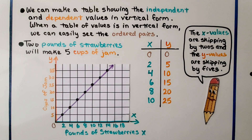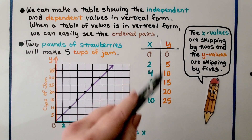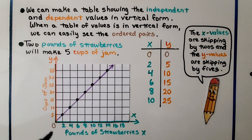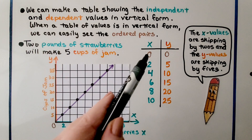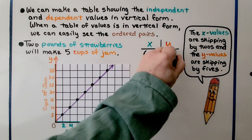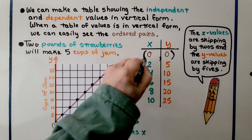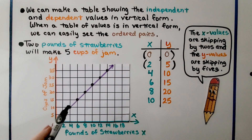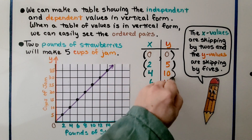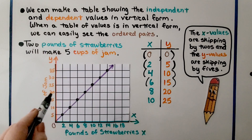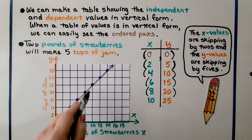We can make a table showing the independent and dependent values in vertical form. When a table of values is in vertical form, we can easily see the ordered pairs. It's telling us 2 pounds of strawberries will make 5 cups of jam. The pounds of strawberry is our x value and the cups of jam is our y value. If we don't use any strawberries, we won't have any jam, so (0, 0) is our first ordered pair. Then we have (2, 5), (4, 10), (6, 15), (8, 20), and (10, 25).